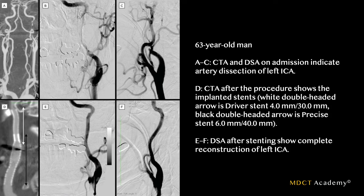This is a 63-year-old man. Images A to C show a CTA and conventional angiogram demonstrating an arterial dissection with slow filling of the left internal carotid artery. Image D is post-procedure, where they implanted two stents — shown by white double arrowheads and a black arrow — with approximately 12 to 15 percent overlap to close off the false lumen. On the angiogram, the active dissection confirmed that the false lumen would continue to expand and potentially rupture, necessitating the bilateral stent placement.